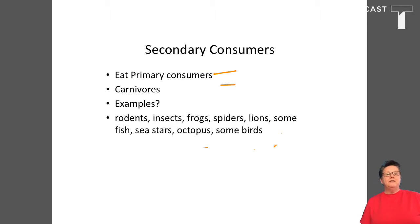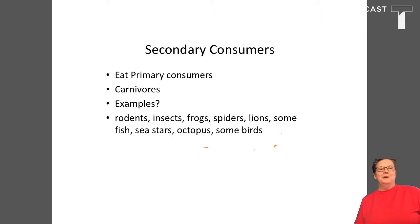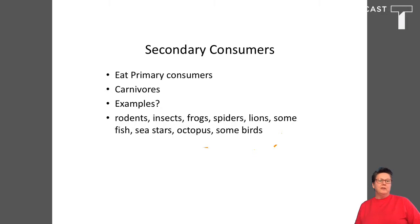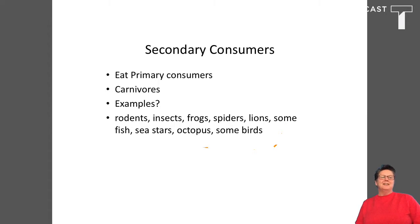Now let's talk about secondary consumers. Secondary consumers feed on primary consumers, and since they're feeding on other animals primarily, we refer to them as carnivores. Within aquatic systems they feed on zooplankton, which are primarily miniature animals as well as protozoans. Some examples include rodents, insects, small fish, frogs, spiders, lions, octopus, and some birds — examples of animals that function as secondary consumers.